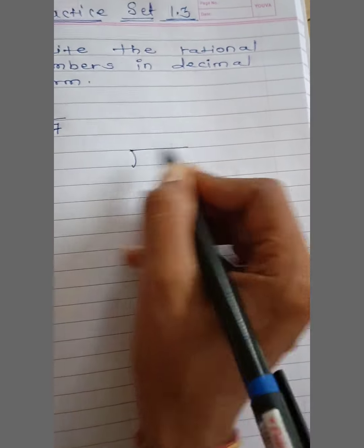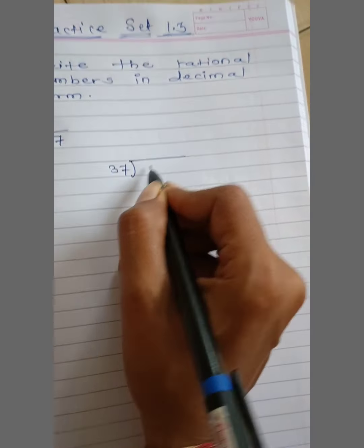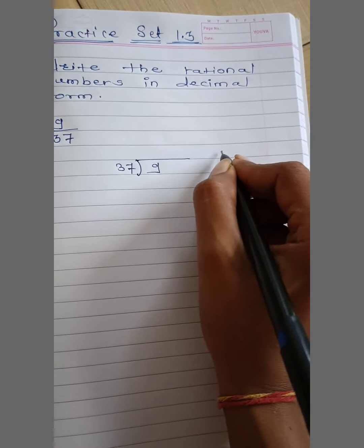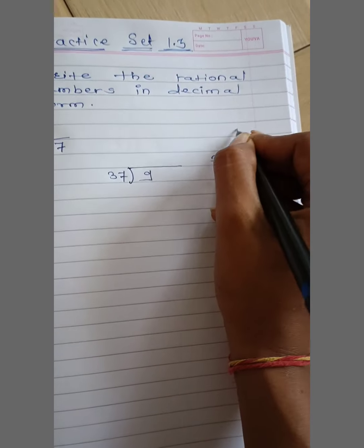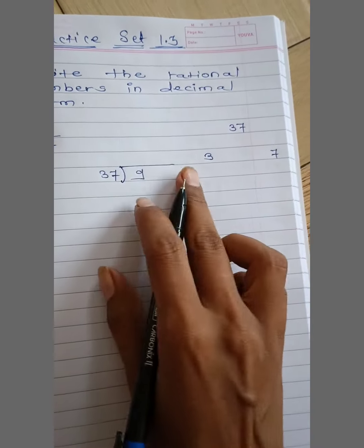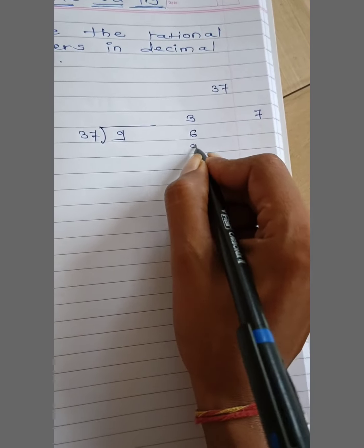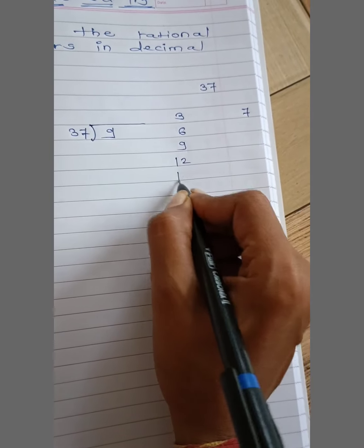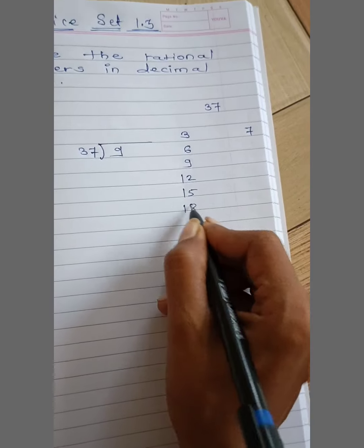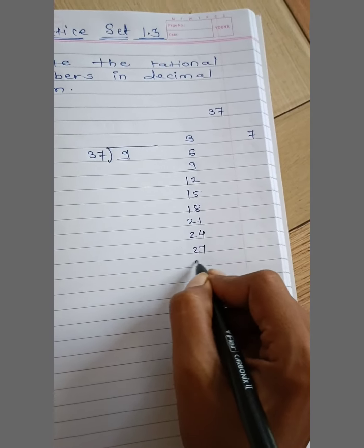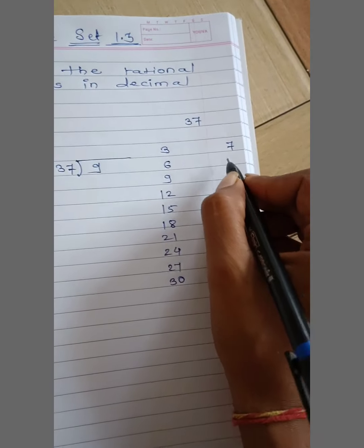Here write down 37. Then here write down 9. Okay, first time 37 ka tables dair karegi. First write down here 3 tables, 3 ka table likhna. Then this side 7 ka.